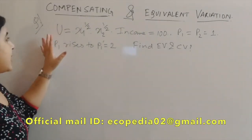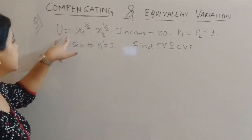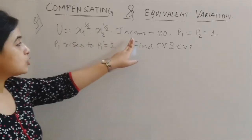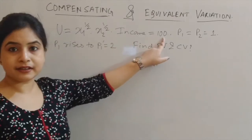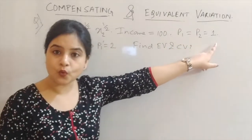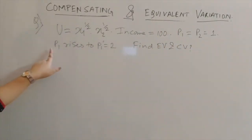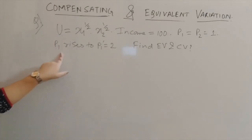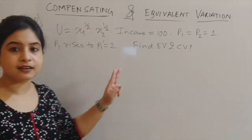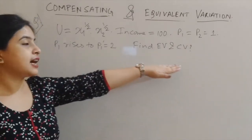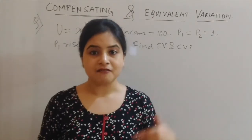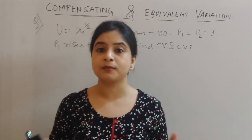So starting with today's session, here is the question. We have a utility function u equal to x1 to the power half and x2 to the power half. The initial income is equal to 100 and the initial prices of the two goods p1 and p2 are equal to 1. In the final scenario, the price of x1 has increased from p1 to p1 dash, which is 2. We need to find the EV and CV.